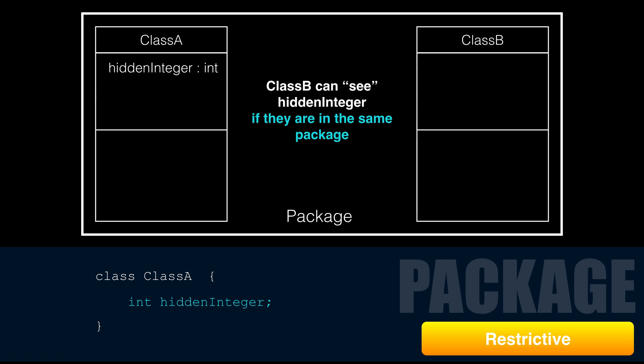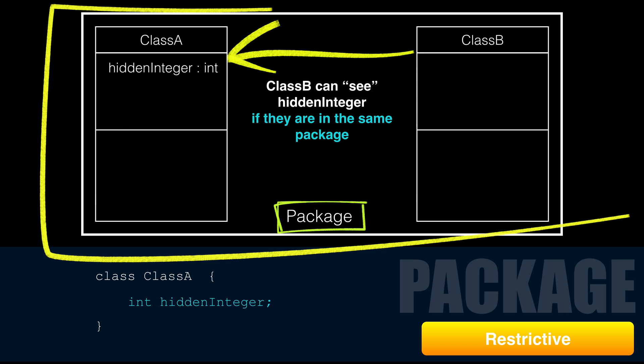We saw Java packages in the last lesson. PackageScope says this class, method, or attribute can only be seen by other classes inside the package. Classes belonging to other packages cannot see anything marked for a different PackageScope.